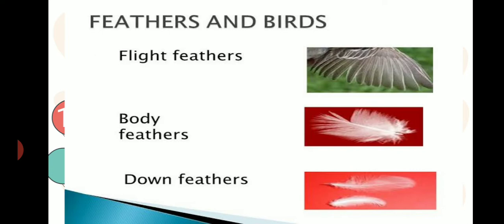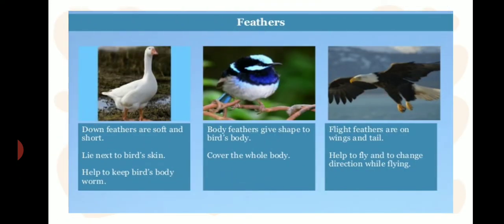Mainly there are 3 types of feathers: flight feathers, body feathers, and down feathers. All these feathers have different functions. Down feathers are soft, short, and fluffy. They lie next to the bird's skin — we can say these are present on the belly part of the bird — and they help to keep the bird's body warm, providing warmth to the body.